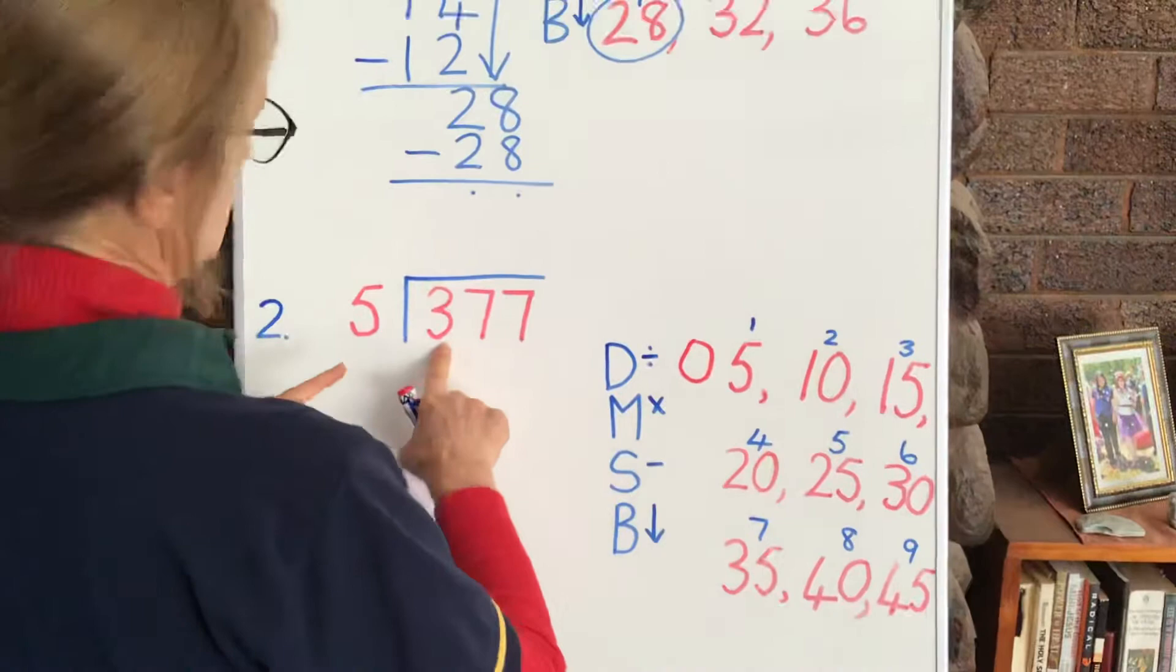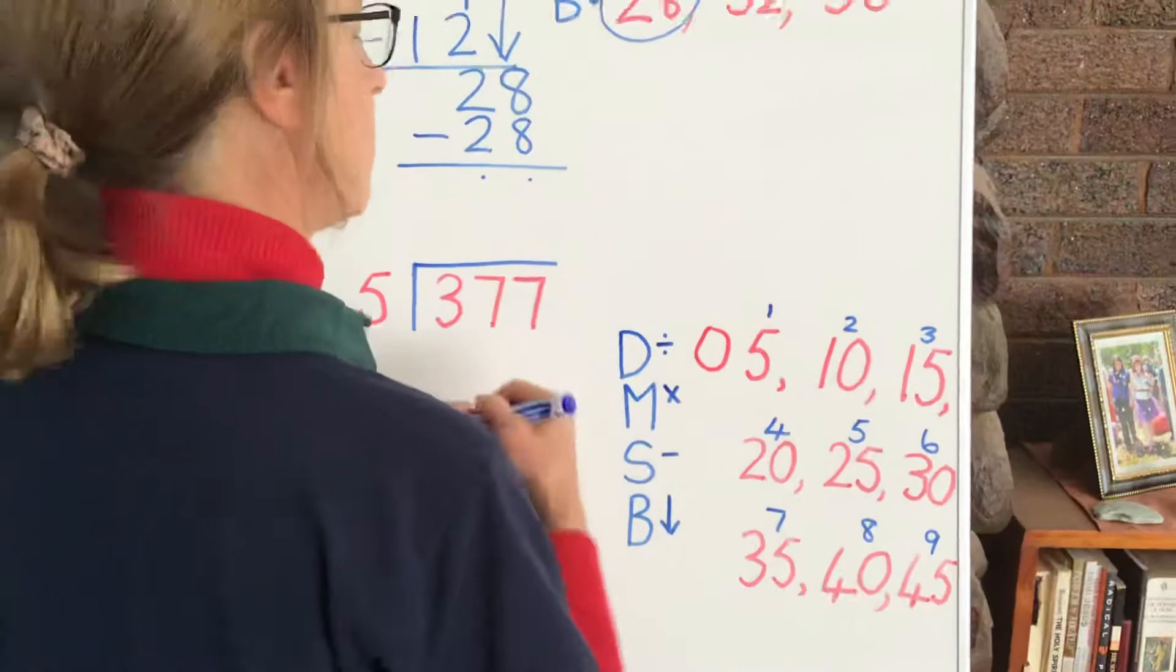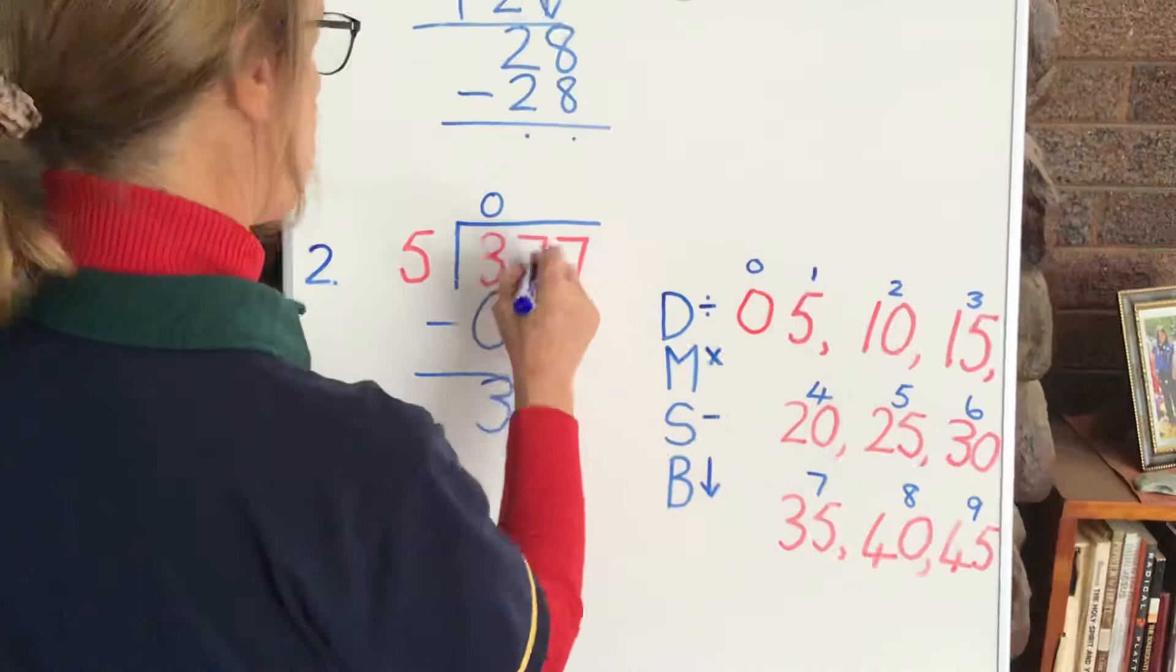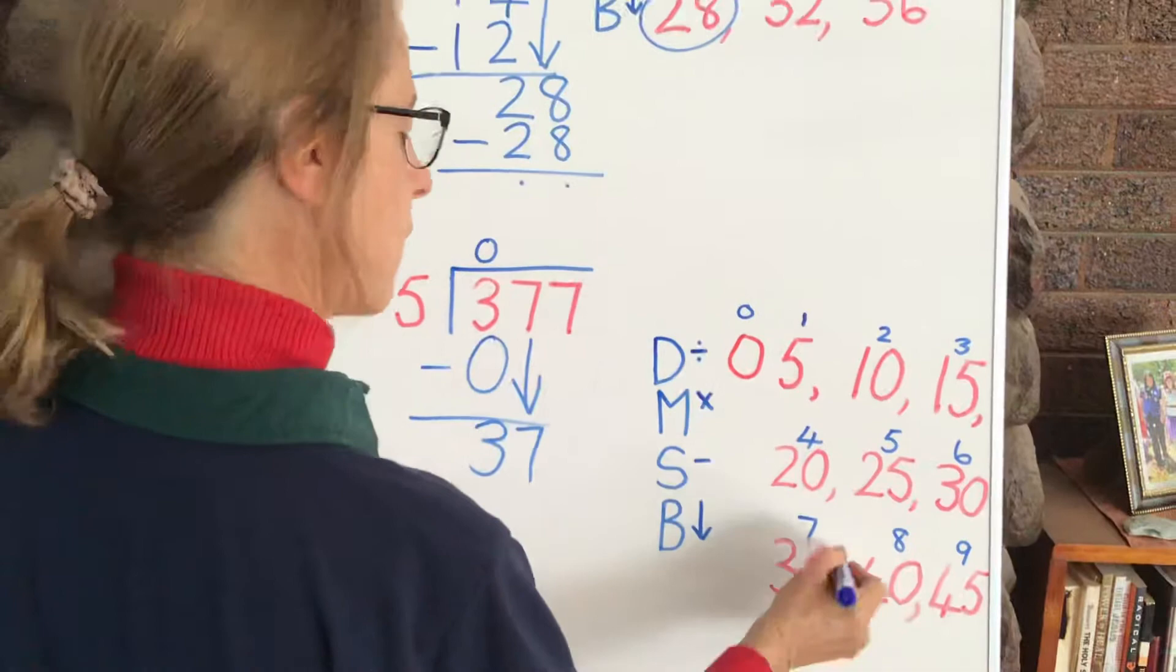If we find that this is smaller than our number we're dividing by, then we have to put a 0. Now, remember, it's 0 times... sorry, 0 times 5 is 0. There we go. And 3 minus 0 is 3. Now, bring down our 7. Now, we're looking for 37.